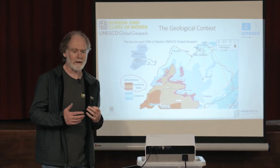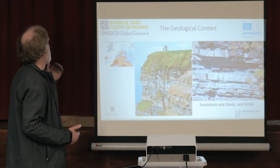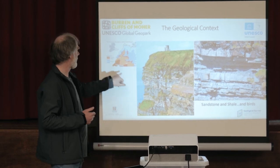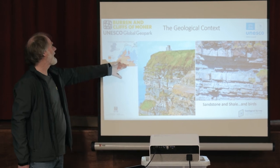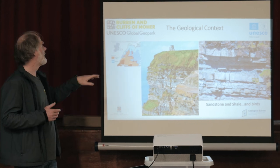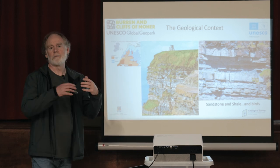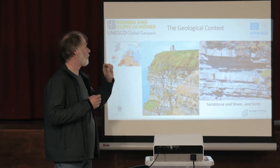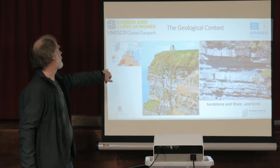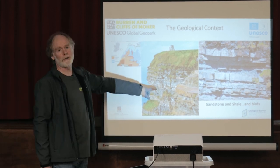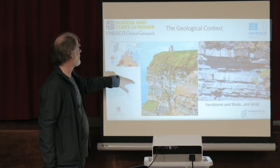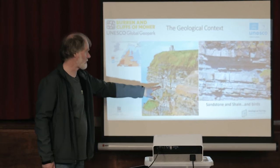We call it sandstone and shale because there are different layers in that unit — just repeated sequences of sandstone and shale. This is our brown area here; this is the Cliffs of Moher, exposed on the coast. Inland in the limestone area you can see the rock easily, but it's not so easy down in the sandstone-shale area — it's mostly fields, bogs, forestry. But on the coast, we can see it, and the Cliffs of Moher give spectacular exposures of these sandstones and shales.